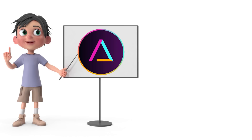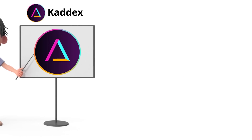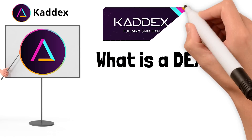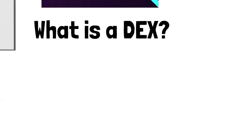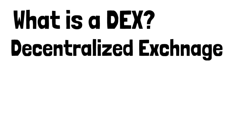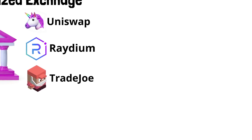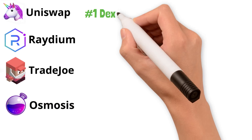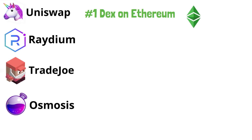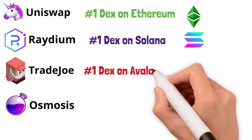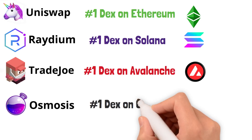In today's video we're going to talk about KadeX. KadeX is the main DEX on Kadena. A DEX is just short for decentralized exchange. If you've been in the crypto space for a while, you've heard about other DEXes like Uniswap, Raydium, Trader Joe, or Osmosis. Uniswap is the number one DEX on Ethereum, Raydium on Solana, Trader Joe on Avalanche, and Osmosis on Cosmos.